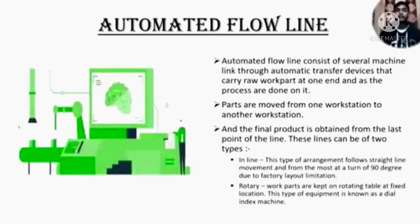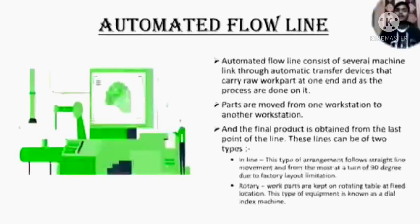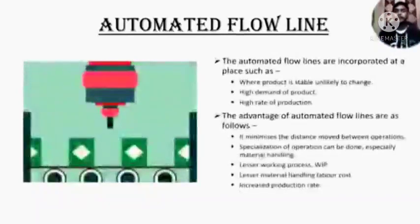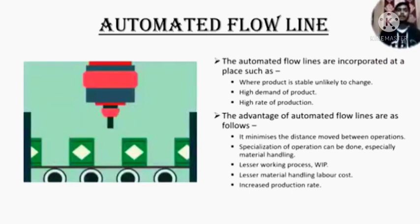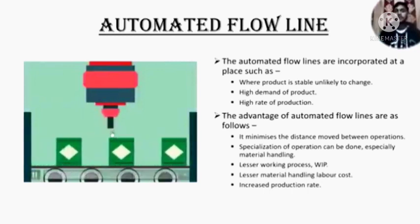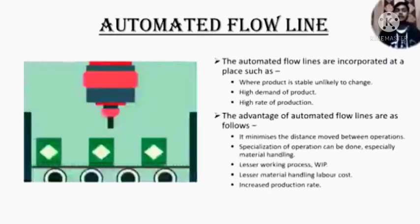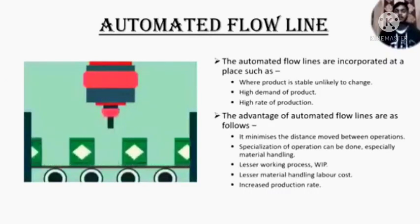Inline: this type of arrangement follows straight-line movement and forms at most a turn of 90 degrees due to factory layout limitations. And rotary: its work parts are kept on a rotating table at fixed locations — this type of equipment is known as a dial index machine. Automated flowlines are incorporated where the product is stable and unlikely to change, there is high demand, and high rate of production. Advantages include: minimizes distance moved between operations, specialization of operations, especially material handling, lesser work-in-process (WIP), lesser material handling labor cost, and increased production rate.